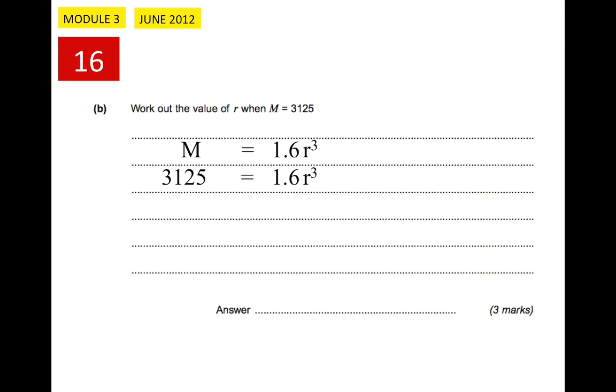So putting M equal to 3,125, you get 3,125 equals 1.6 times r cubed. Dividing both sides by 1.6, you get 1,953.125 equals r cubed.